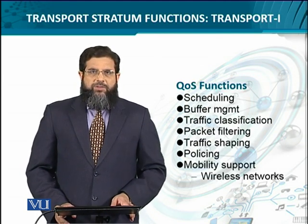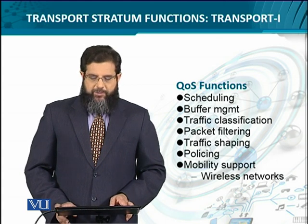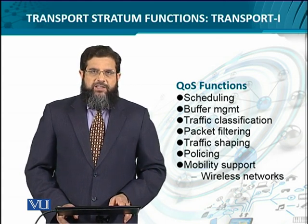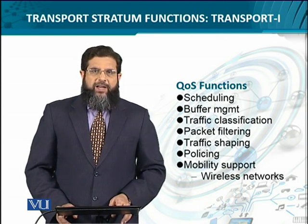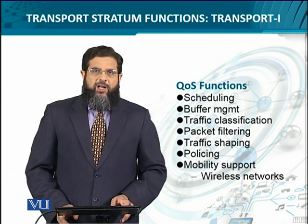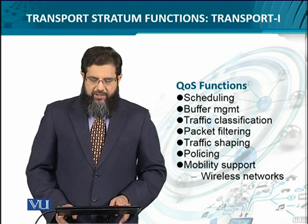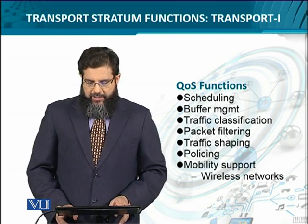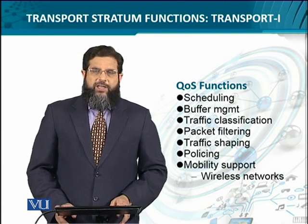Since quality of service is an important functionality, there are several aspects provided by the access network functions. First is scheduling, which deals with prioritizing the outflow of traffic. Then there is buffer management — for instance, when packets arrive faster than a network element can handle, some process must be executed to manage that situation. There is also classification of traffic according to service level agreements or network policies, and filtering of traffic depending on what is permissible, which traffic class is to be penalized, and which is to be given high priority.